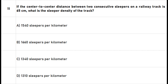Question 11: If the center-to-center distance between two consecutive sleepers on a railway track is 65 centimeters, what is the sleeper density of the track? A. 1540 sleepers per kilometer. B. 1660 sleepers per kilometer. C. 1340 sleepers per kilometer. D. 1310 sleepers per kilometer. The right answer is option A: 1540 sleepers per kilometer.